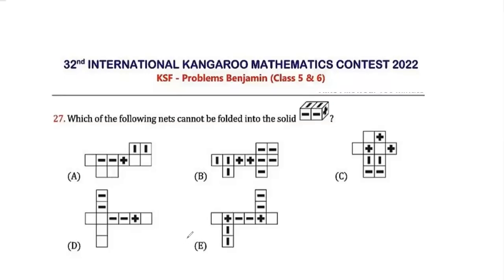Hello friends, today we will be doing Math Kangaroo year 2022 level 5 and 6 question number 27, which is a 5-pointer question. Let's read the question: which of the following nets cannot be folded into the solid?